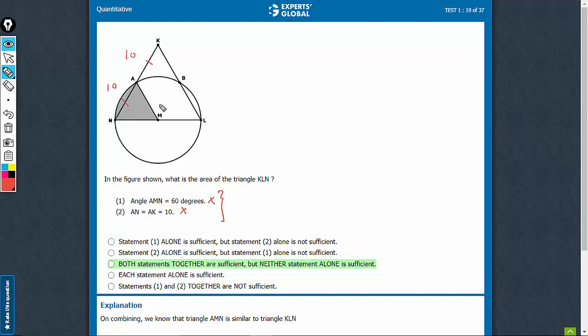Let's combine and check. AN is equal to AK is equal to 10. Then it says this angle is 60. So see, this is radius, this angle is 60. This is also radius. So the angles opposite to these two have to be equal. So that means all three angles become 60. This becomes an equilateral triangle.